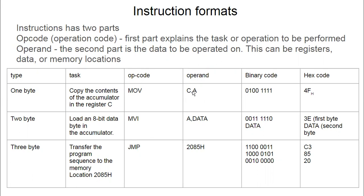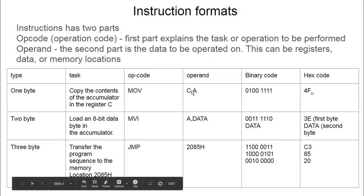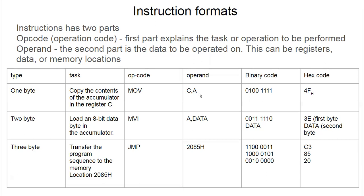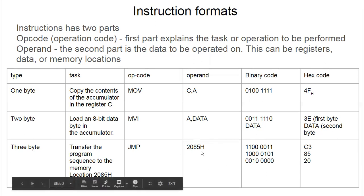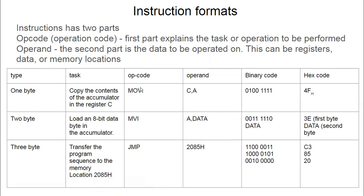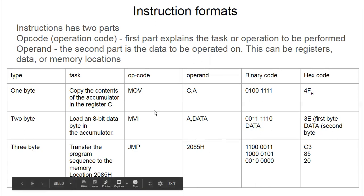The operands available in 8085 are registers, memory locations, and data. Based on which operand is used, an instruction will be one byte, two byte, or three byte. If the operand consists of only registers, it will mostly be a one-byte instruction (8-bit). If it consists of a register and data entered by the user, it will be a two-byte instruction. If the operand contains a 16-bit address, it will mostly be a three-byte instruction — the opcode takes 8 bits and the address takes 16 bits, totaling 24 bits, which is three bytes.